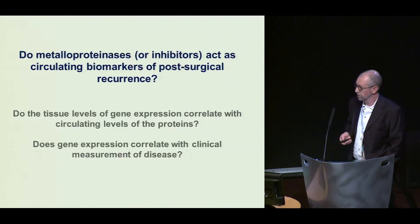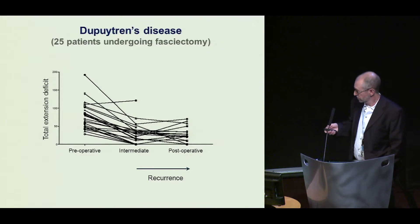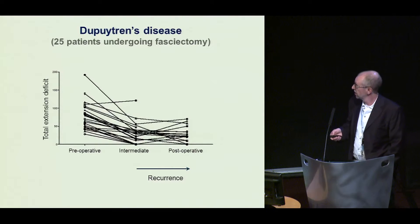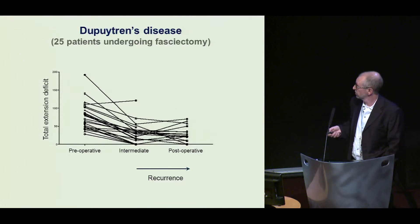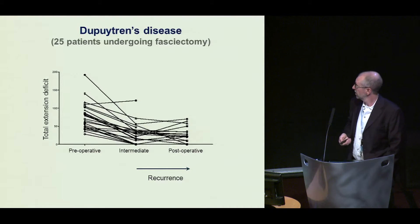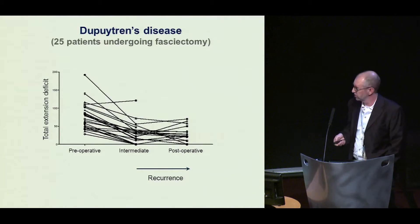There are also a couple of other sub-questions I'll get to. We took 25 patients who underwent fasciectomy, and this shows their total extension deficit. You can see it decreases to a sort of three-month post-operative visit, which is what you'd expect — they improve. Then over a year or so, some patients have an increase in TED, and that is how we're defining recurrence in this instance.